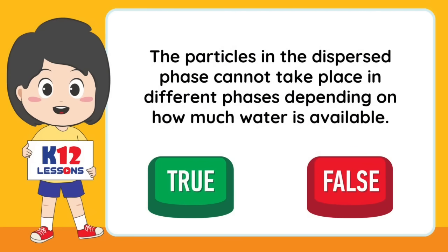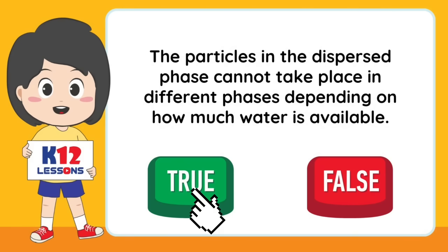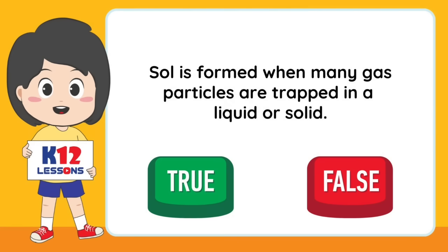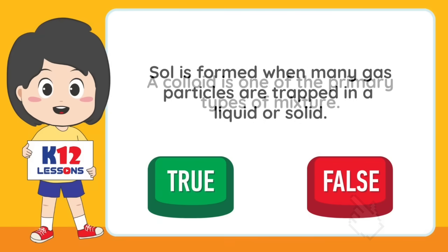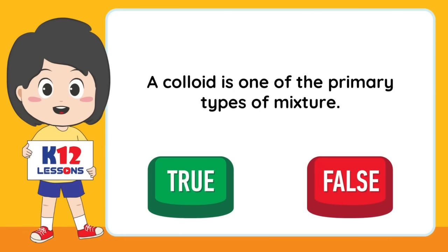True or false: The particles in the dispersed phase cannot take place in different phases depending on how much water is available. True or false: The soil is formed when many gas particles are trapped in a liquid or solid. A colloid is one of the primary types of mixture.